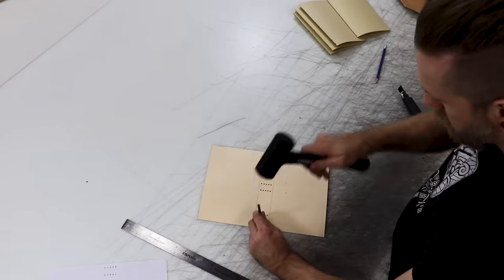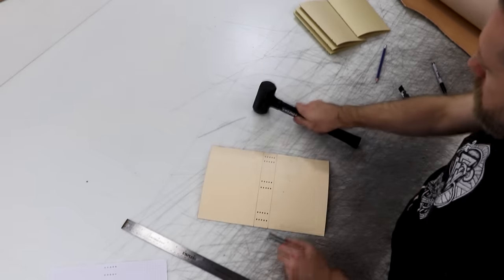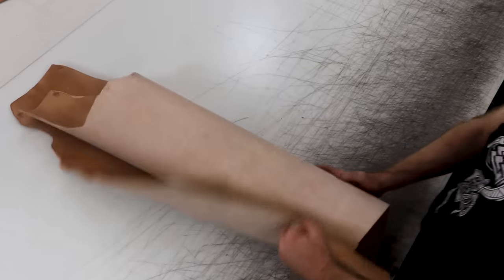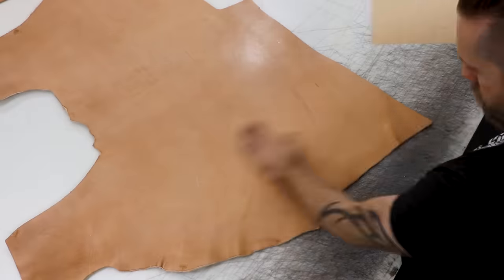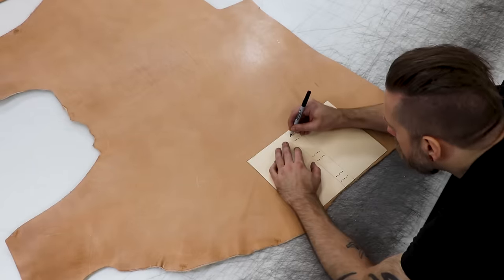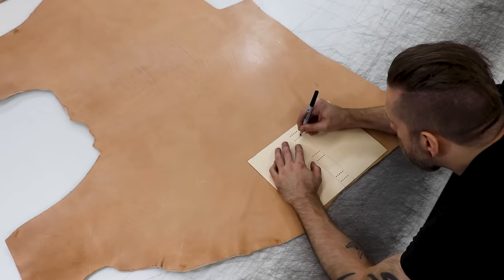Now we'll punch all these, and then that'll be our completed cover pattern. The leather I used here was, I think it was seven ounce vegetarian. You can use a little thinner if you want.